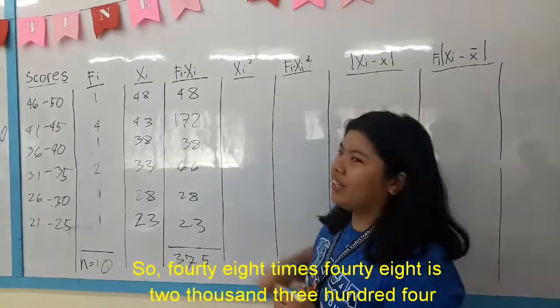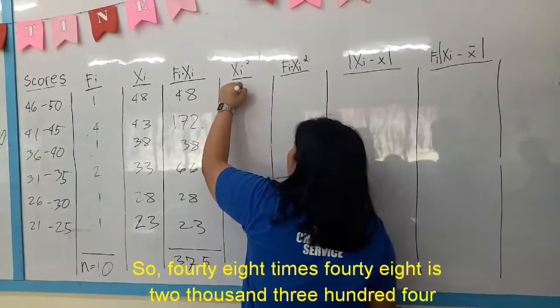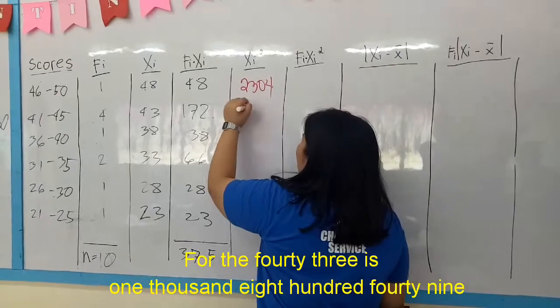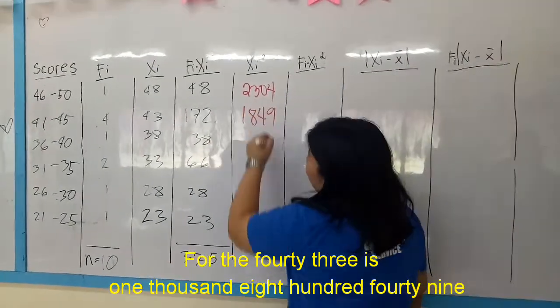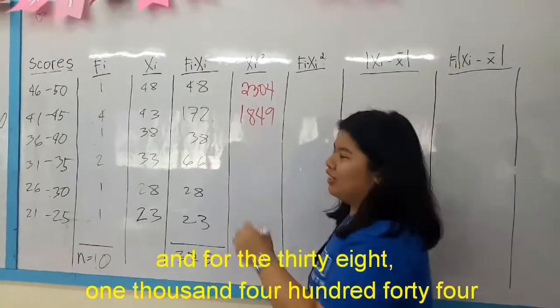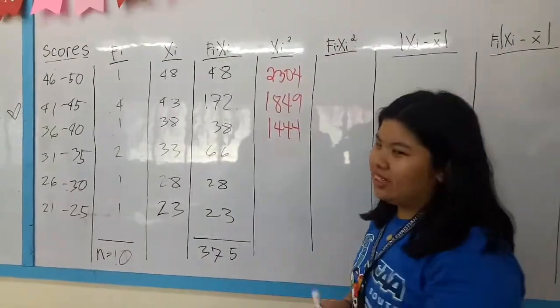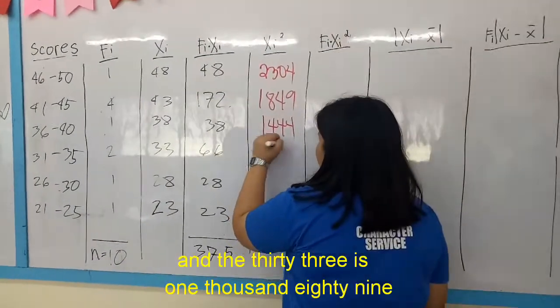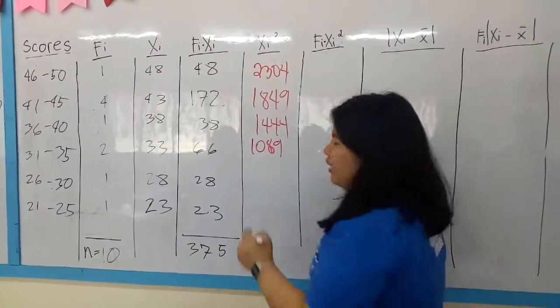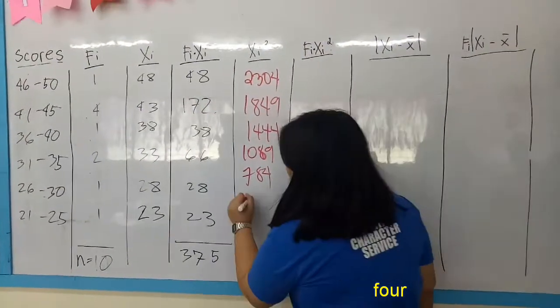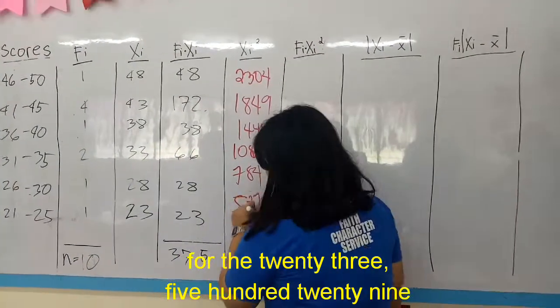So 48 squared is 2,304. Then 43 squared is 1,849. And 38 squared is 1,444. Then 33 squared is 1,089. For 28 squared is 784. And 23 squared is 529.